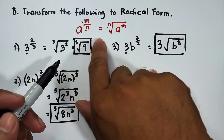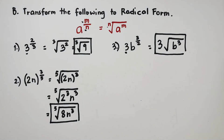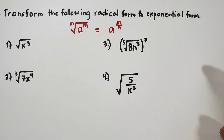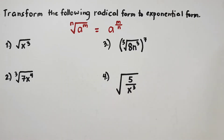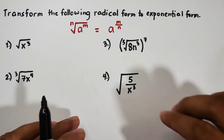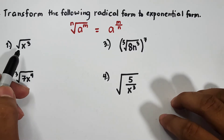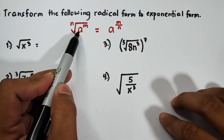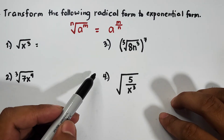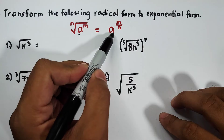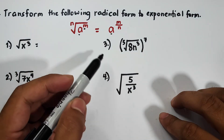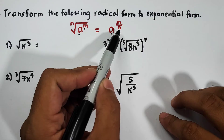I hope you got that method on how to transform expressions with rational exponents into radical form. Now let's continue with the next part — reversing the process from radical form to exponential form. Look at the pattern: the nth root of a raised to m is equal to a raised to m over n. The radicand a will serve as the base, the exponent of the radicand m will be the numerator, and the index will become the denominator of the rational exponent.